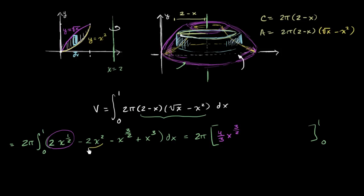And then for this term right over here, it's going to be negative 2/3 x to the third. And you can take the derivative here to verify that you actually do get this.